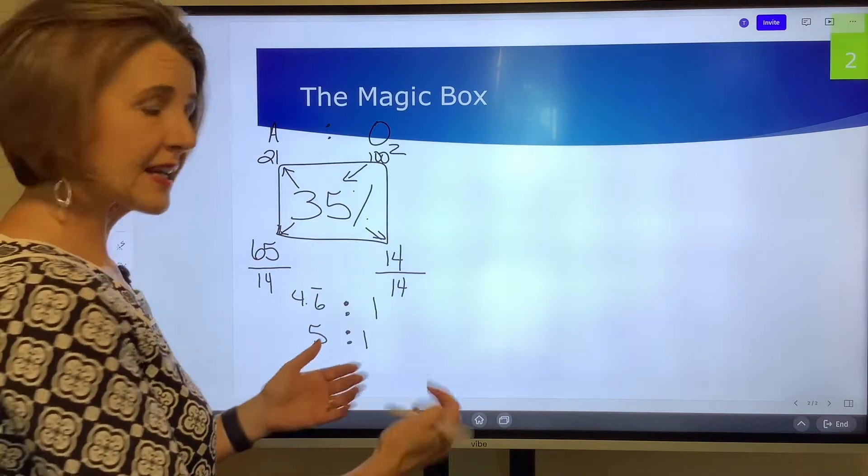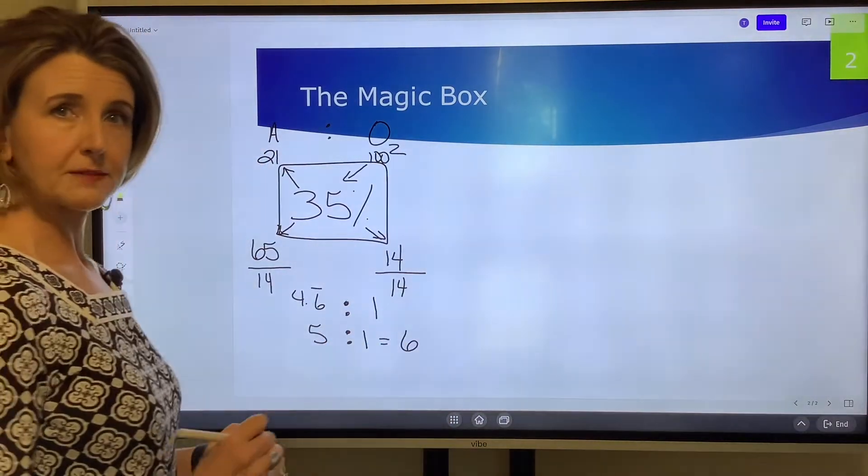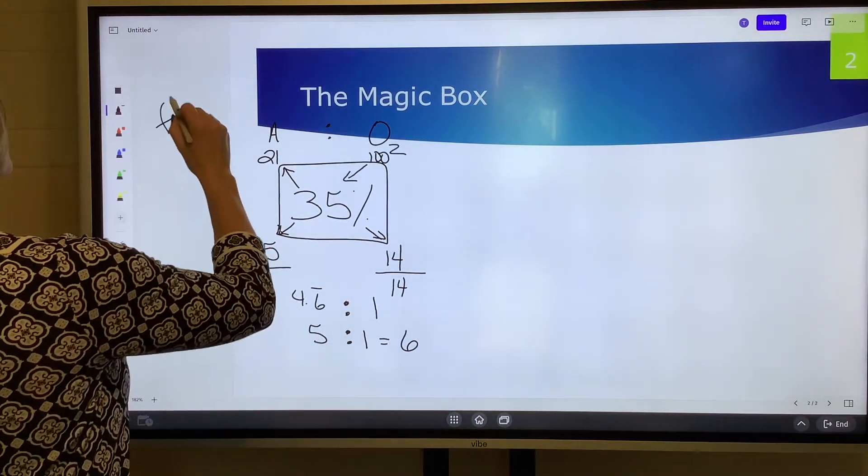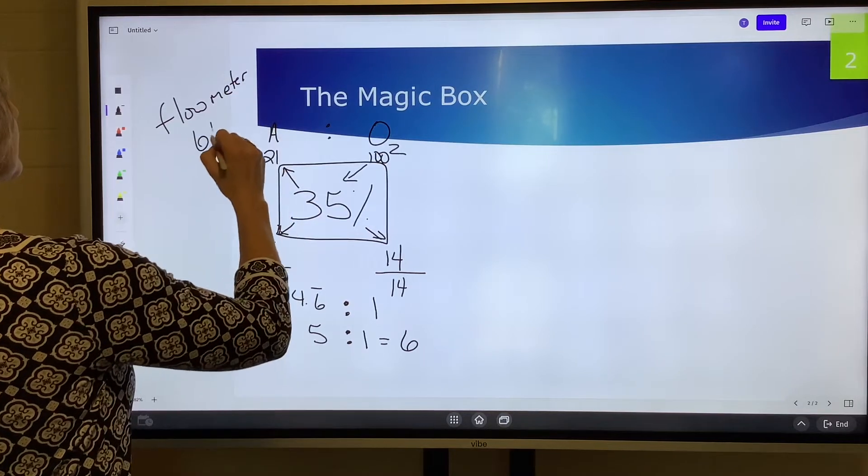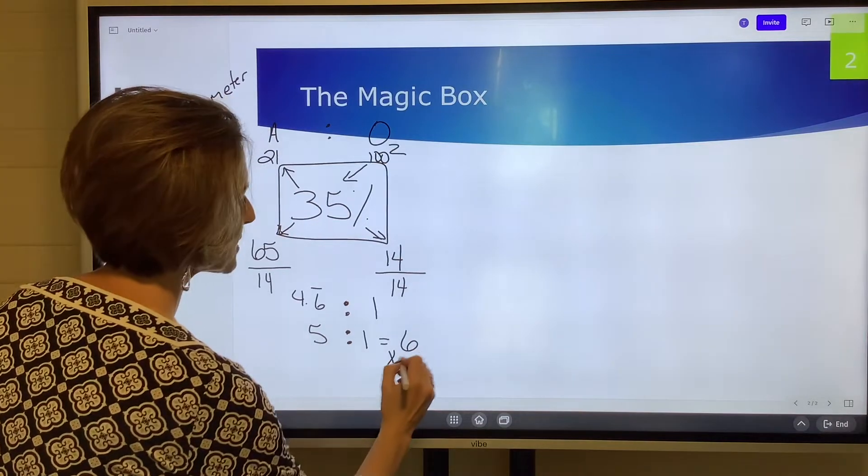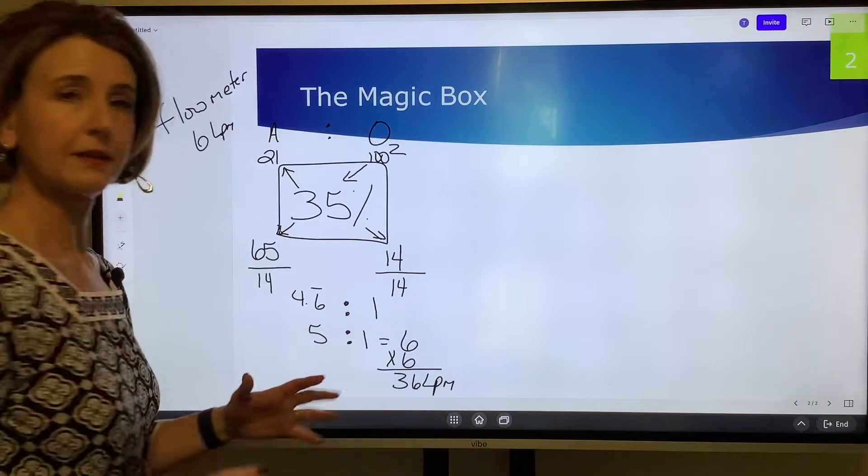The next thing you do is you add those two together, so I have 6 total parts. Let's say I'm running this 35 percent, the flow meter is set at 6 liters per minute. Now I take my total parts times the flow on the flow meter and we get 36 liters per minute.